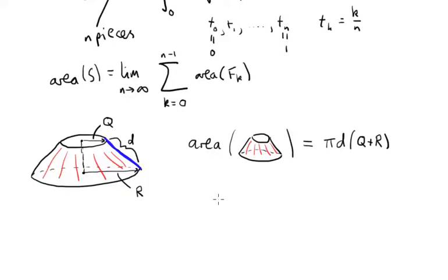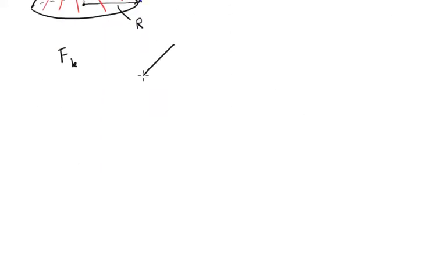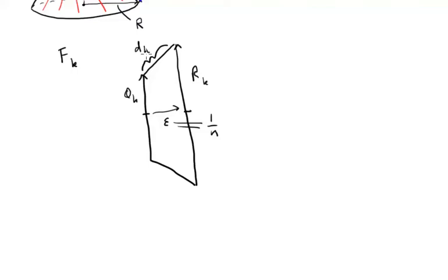So we're going to have lots and lots of frustums, so given the frustum fₖ, let me draw a picture of it just from side on. So here we have radius qₖ, here we have radius rₖ. The distance between these is ε, which is, remember, 1 over n. And this distance here I will call dₖ, because they all depend on k.